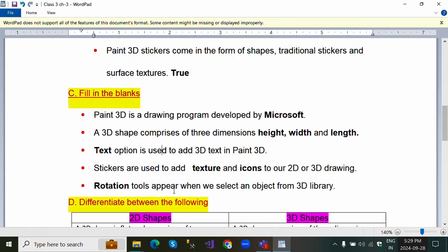Stickers are used to add texture and icons to our 2D or 3D drawings. Rotation tools appear when we select an object from 3D library.